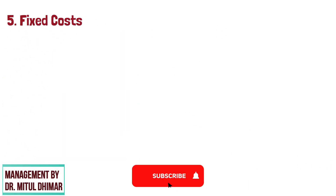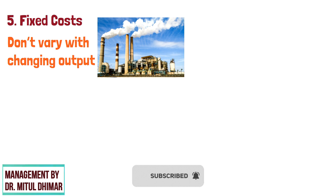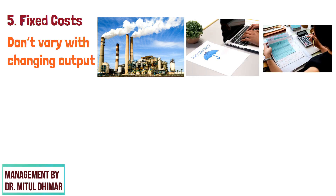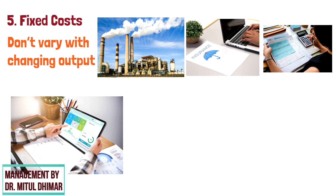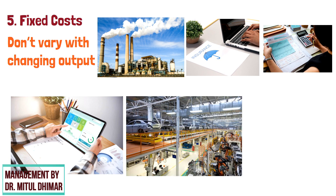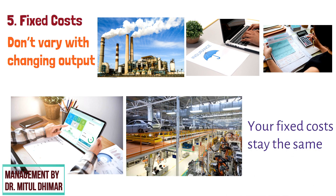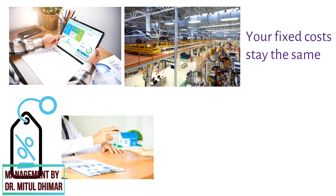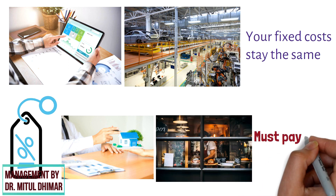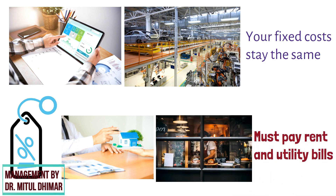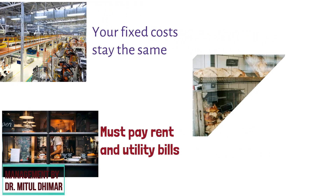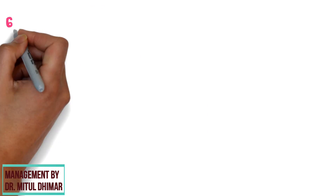Number 5: Fixed Cost. The cost which doesn't vary with changing output. Fixed cost might include the cost of building a factory, insurance, and legal bills. Even if your output changes or you don't produce anything, your fixed costs stay the same. They tend to be recurring, such as interest or rent being paid per month. For example, a bakery must pay rent and utility bills irrespective of how much bread is produced and sold.